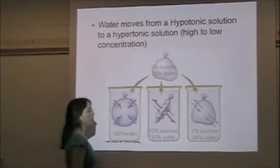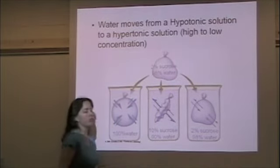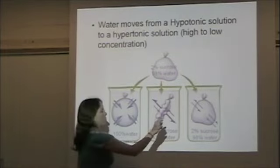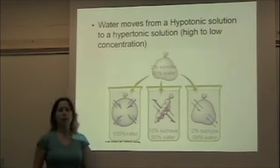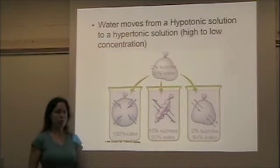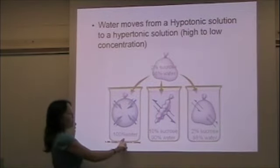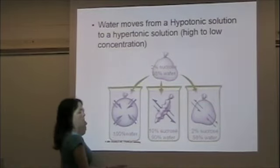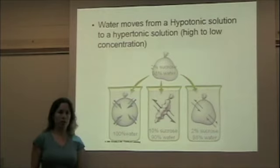In the third example, there's equal concentration of water in the beaker as in the bag, so this is our isotonic example. Water moves in an equal amount in and out of the bag simultaneously — it's not that there's no water movement, it's just an equal amount in both directions. So the first scenario has the bag in a hypotonic environment, the second has the bag in a hypertonic environment, and the third has the bag in an isotonic environment.